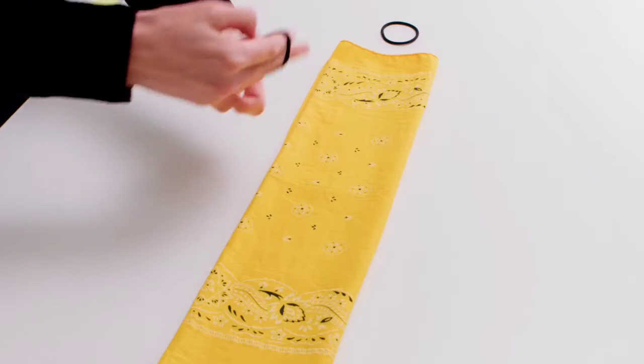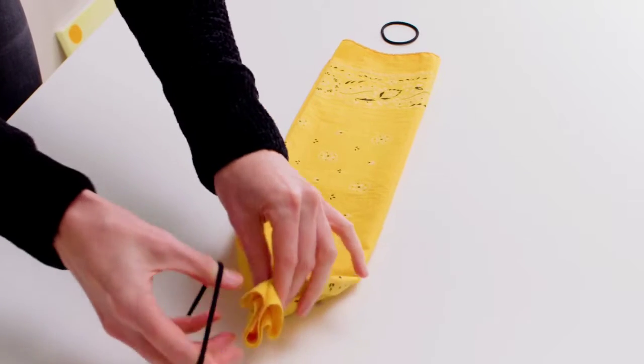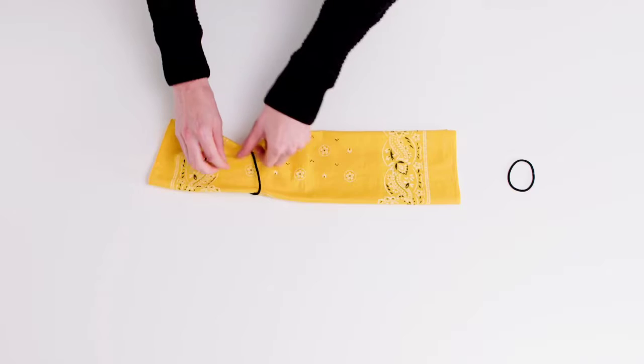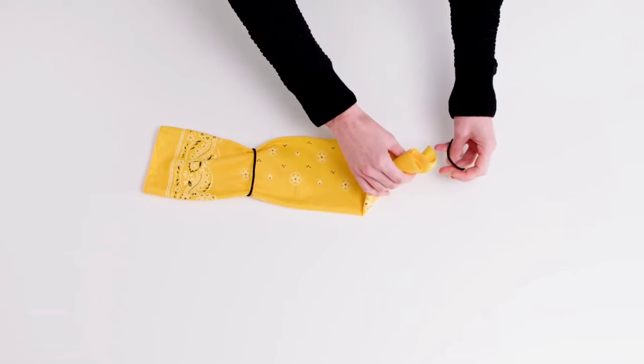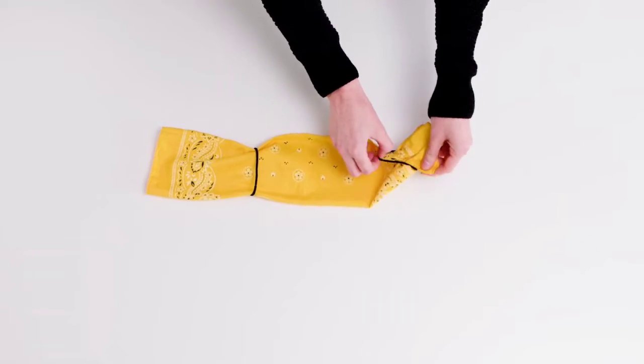Take one of the hair ties or rubber bands and wrap around the cloth, pulling it through the center of the hair tie or rubber band. The hair ties or bands should be about 6 inches apart.